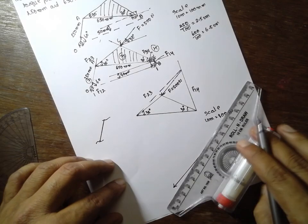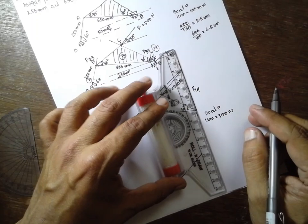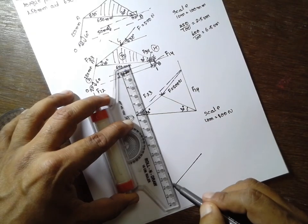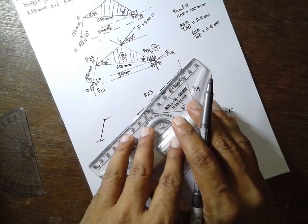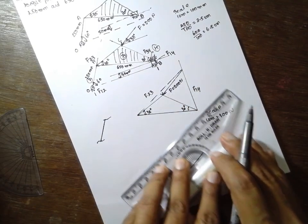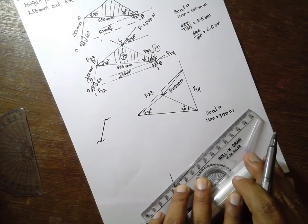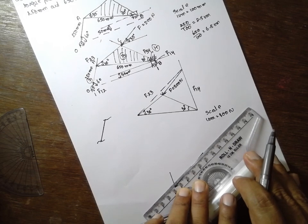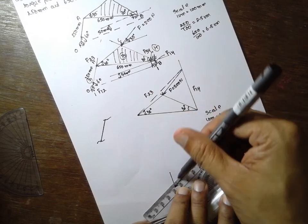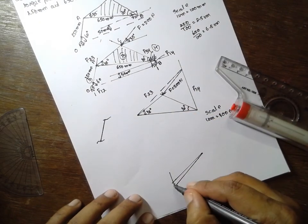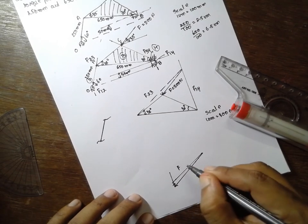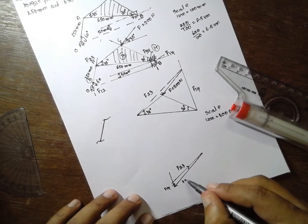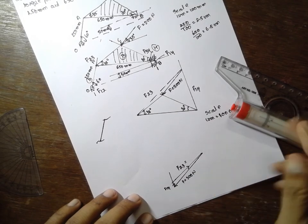Next, I will draw this line. Either you can draw here or here, no problem. When I am setting, you will get the same answer. Parallel to this one, draw a line. If the arrow is here, next arrow will be here, and next arrow will be here. This force is F23 and this is F14. Now we have to find F23.